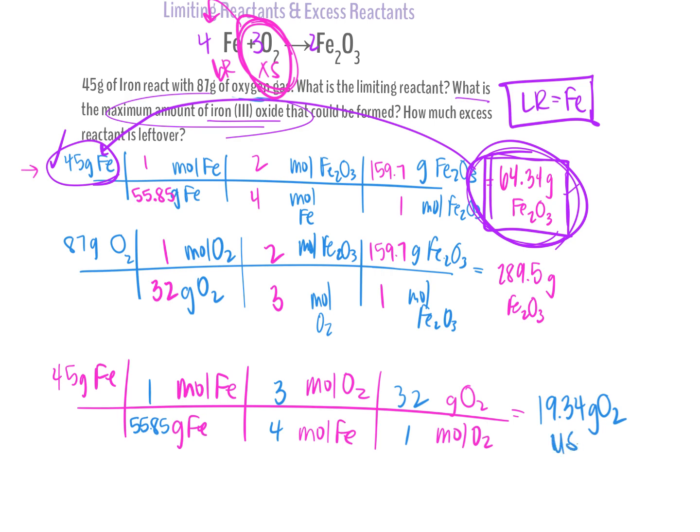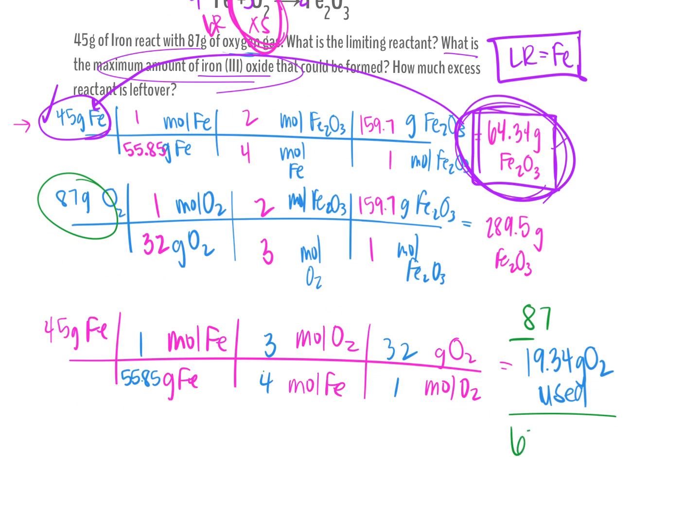So even when I do this, I like to write out the word used. I used 19.34 grams of oxygen, but that's not what my question asks. It asks how much is left over. And so I'm going to take my starting amount of oxygen. So how much oxygen did I dump in to start? 87 grams. So I'm going to take 87 grams minus the 19.34 that I used. And that will tell me that I have 67.66 grams of O₂ left over. Do we see that last step we're doing there? We're going to take that starting amount and subtract out the amount that was used.